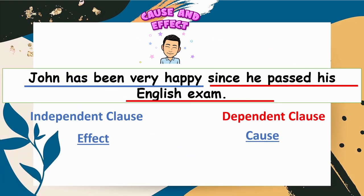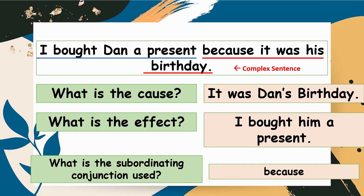Another example: 'John has been very happy since he passed his English exam.' Why is John happy? The cause is he passed his English exam, and the effect is he has been very happy. Another example: 'I bought Dan a present because it was his birthday.' What is the cause? It was Dan's birthday. What is the effect? The answer is I bought him a present.